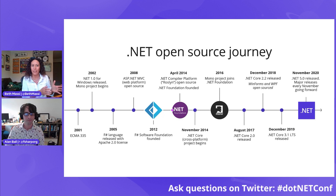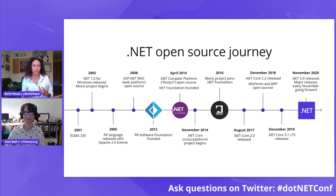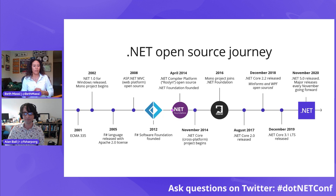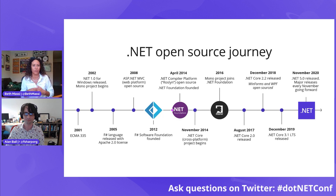In April 2014, the Roslyn compiler platform — a compiler as a service for VB and C# — was released as open source. That same year, the .NET Foundation was also founded, not just for the community and ecosystem but also to support open source projects built on .NET. They provide a lot of project support services in addition to community and ecosystem building.